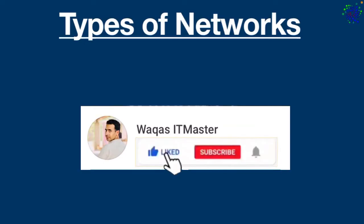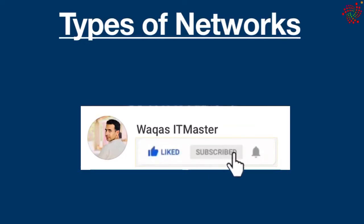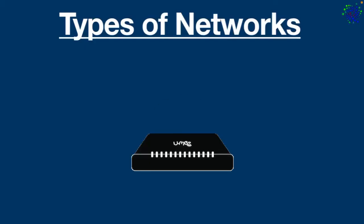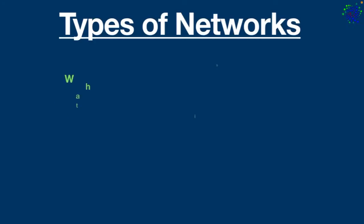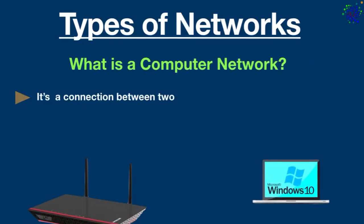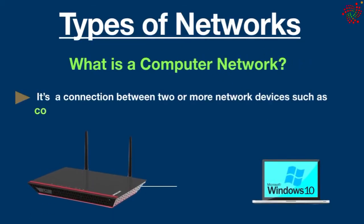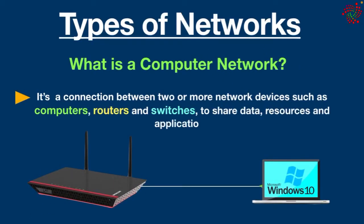Hello everyone, welcome back to another video. Today we are going to talk about the different types of computer networks. Before we get into the types of networks, it's really important to understand what a computer network is — it's a connection between two or more network devices such as computers, routers, and switches to share data resources and applications.